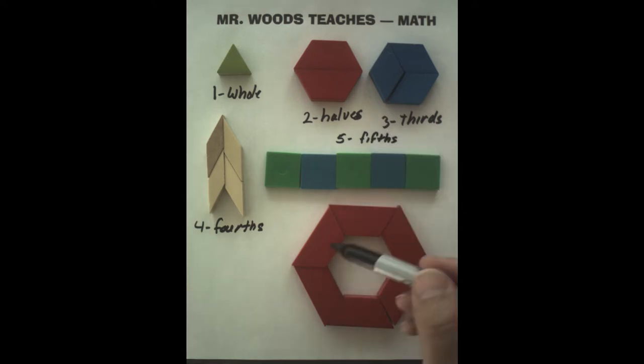And then down here, it's a very large hexagon with a hole in the middle, but we have one, two, three, four, five, six, so that's going to be six sixths.